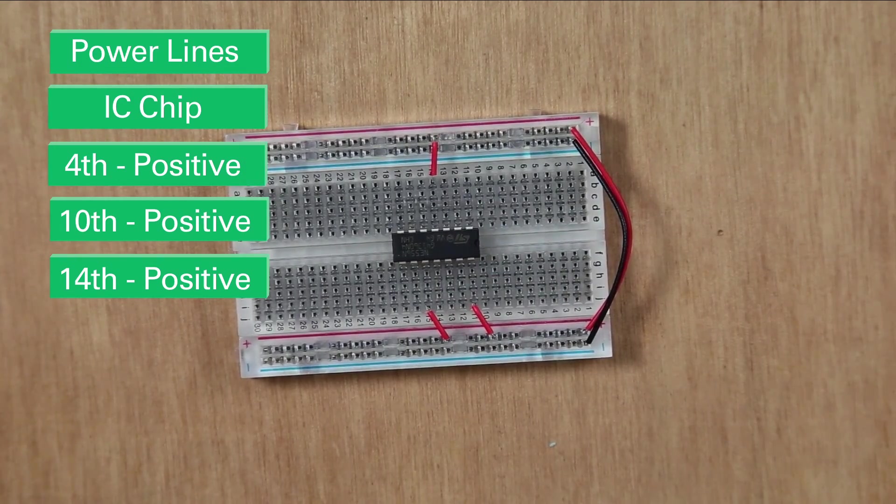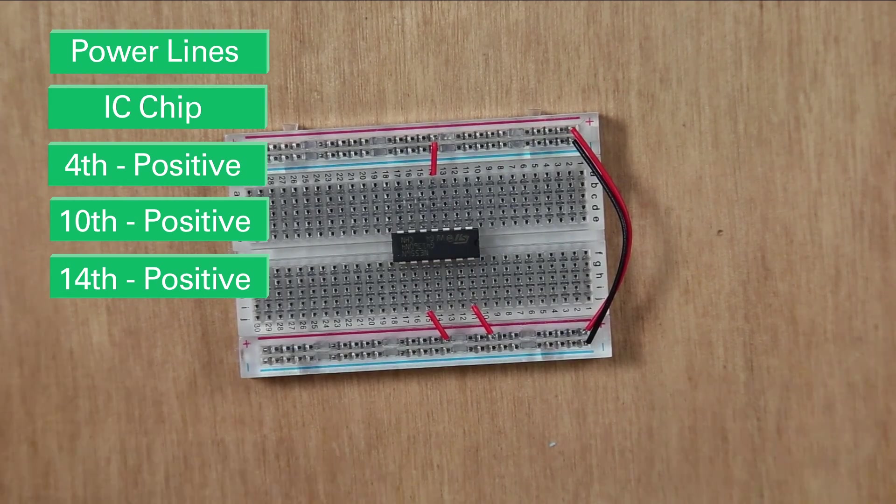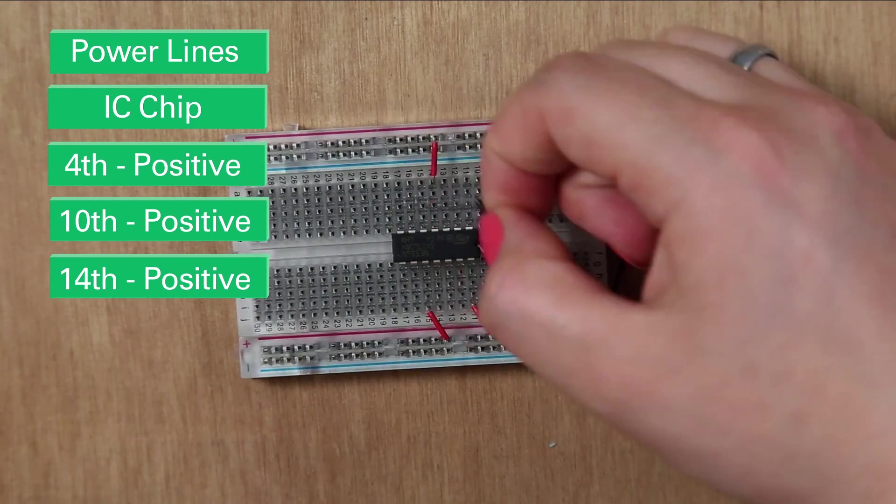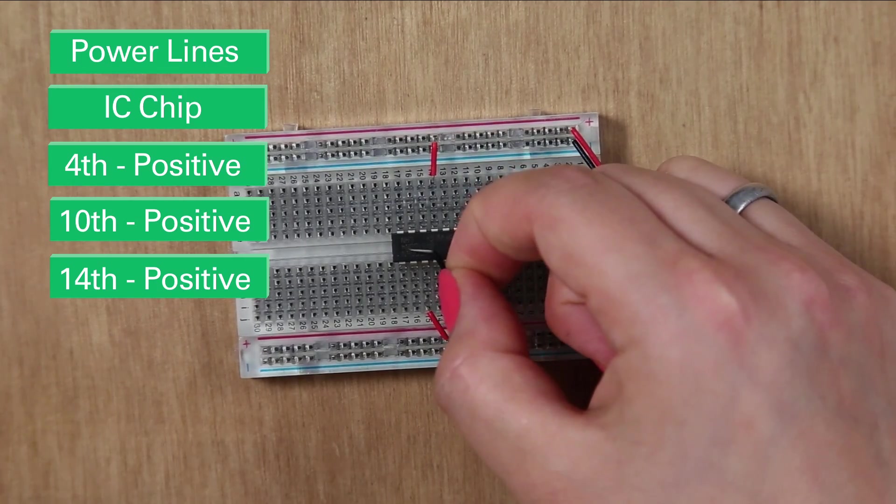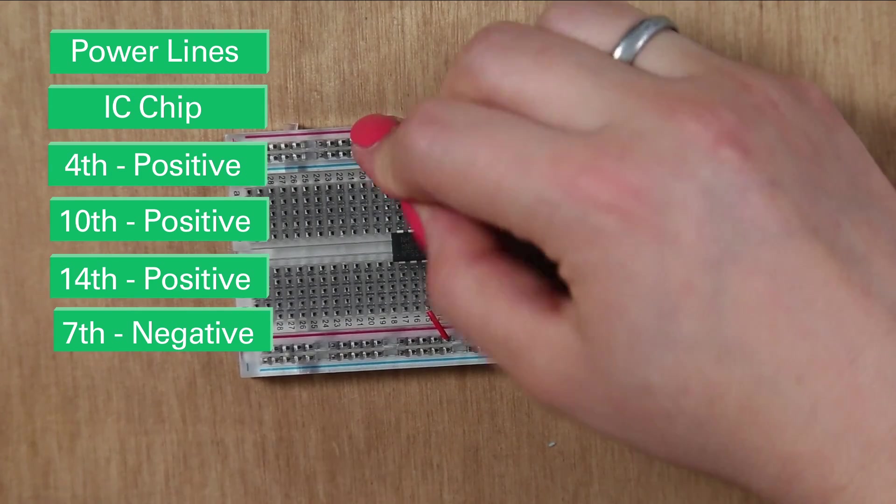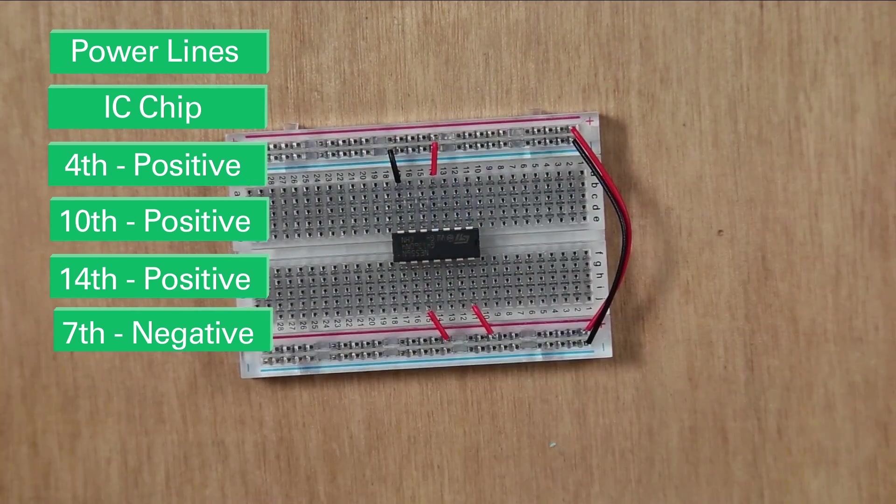So the next one we're going to plug in is pin 7 to the negative rail. So we're using a black jumper wire. So 1, 2, 3, 4, 5, 6, 7. So that's this one here. Like that.